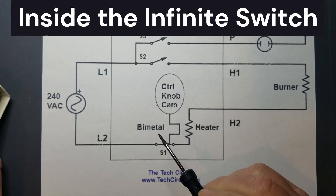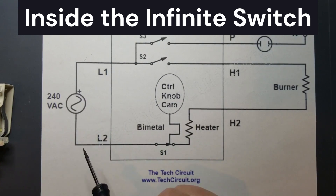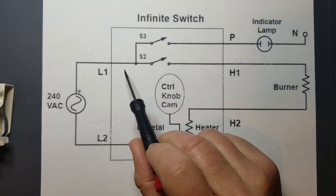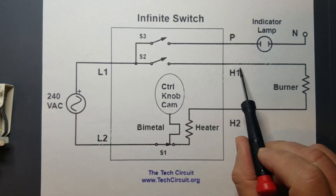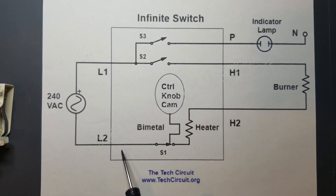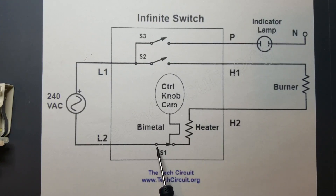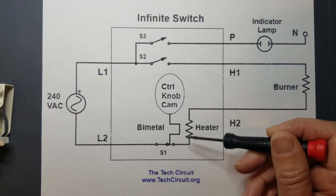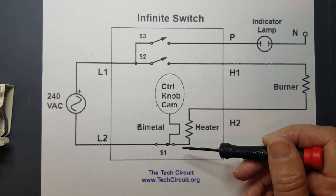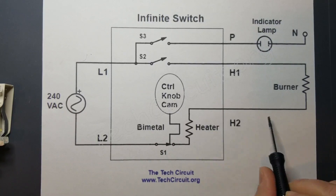Here's a schematic diagram of the infinite switch. Here's your 240 volt power supply. When you turn the knob on, L1 is automatically connected to one side of the burner. L2, however, which is a return path for L1, is regulated by the bimetal strip. This heater represents the heat that is used to bend the strip. The output of the bimetal strip is connected to the other side of the burner.